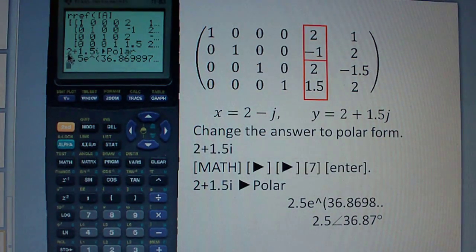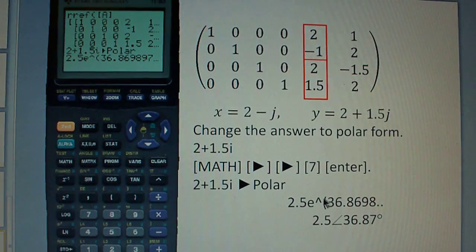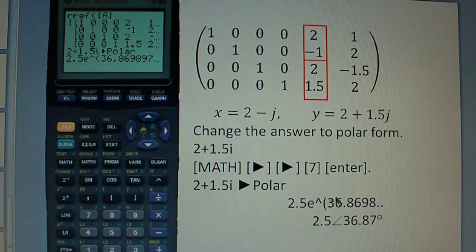And basically what this is saying is that the angle, the phase shift is like 36.86 or 87, and the magnitude of the complex number is 2.5. So when you see this, the way you're going to write your answer is you put 2.5 with the angle 36.87 degrees. That's how you say it.